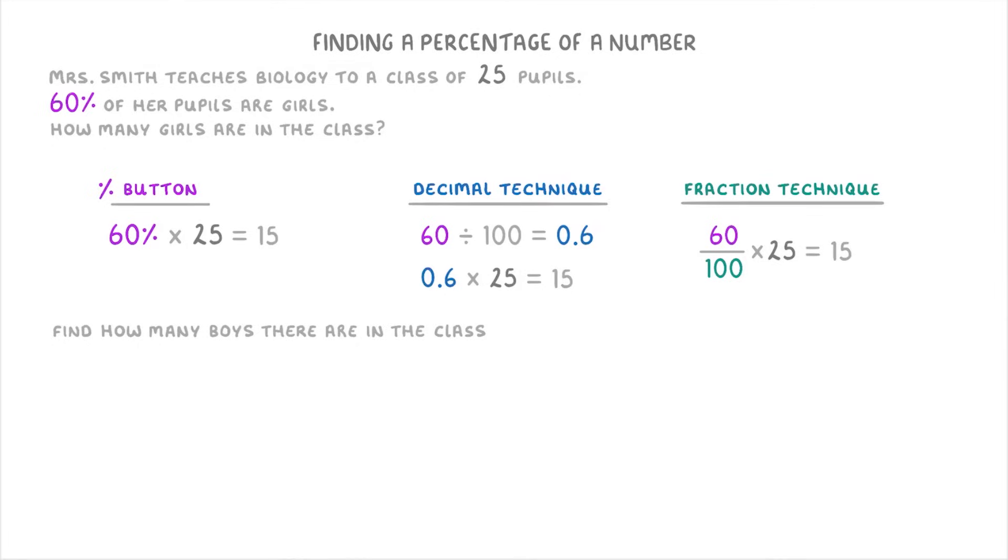You could also be asked to find how many boys there are in the class. And for this, because we know that there's a total of 25 pupils, and 15 of them are girls, all we have to do is 25 take away 15, to find that there must be 10 boys in the class.